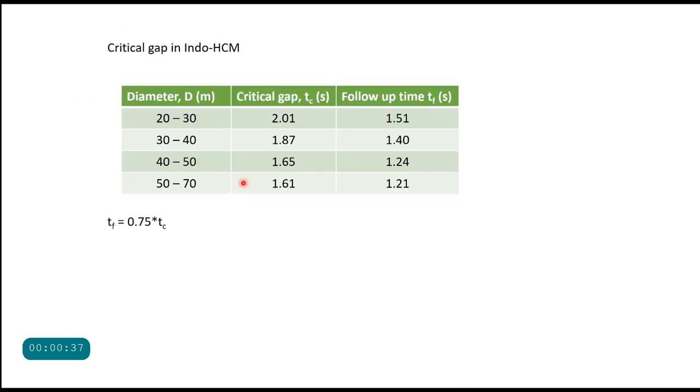The critical gap will vary with the diameter of center island. This is the table given in Indo-HCM to get the value of critical gap for a passenger car for different geometry of the intersection. This follow-up time should be measured in field and is taken as 75% of critical gap value.